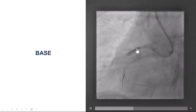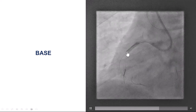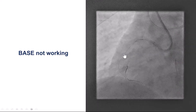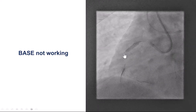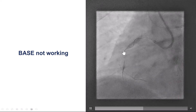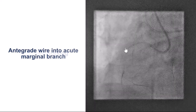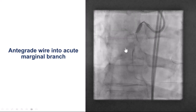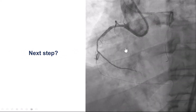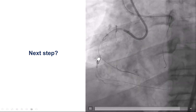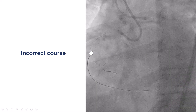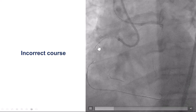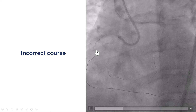We used a slightly oversized balloon into the proximal right coronary artery trying to create a knuckle. However, the wire kept entering into the acute marginal branch. Despite multiple attempts, we were unable to make the wire knuckle and go to the true lumen. We also tried retrograde knuckling with a polymer-jacketed wire, but again no advancement into the lesion. When trying to advance the retrograde wire, it kept following the course of the bridging collateral.